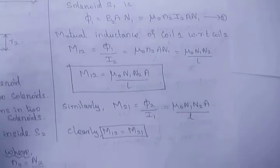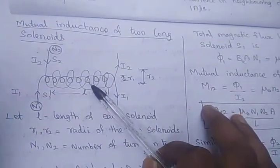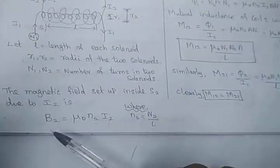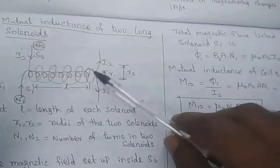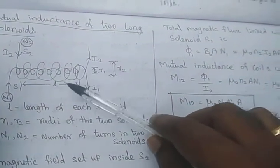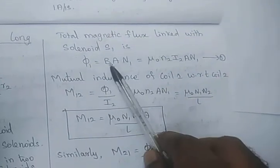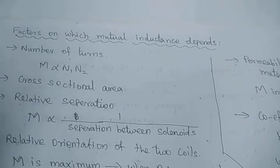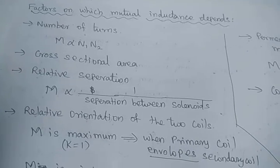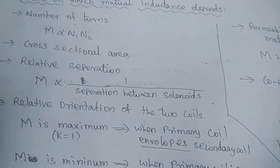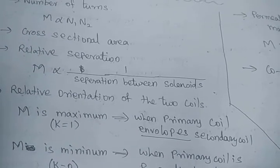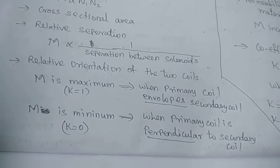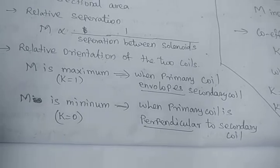To summarize the derivation: first calculate the magnetic field, then use φ = BA to get the flux, and divide by current to get mutual inductance. The factors on which mutual inductance depends are: number of turns, cross-sectional area, and relative separation between the two coils. If separation is more, mutual inductance is less; if separation is less (coils are closer), mutual inductance is more. Mutual inductance is the working principle of the transformer, which will be explained clearly in the next unit.